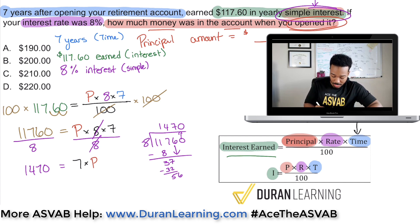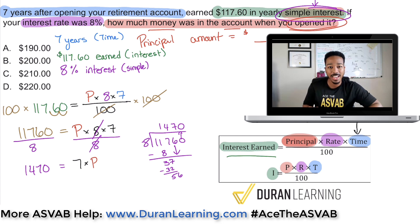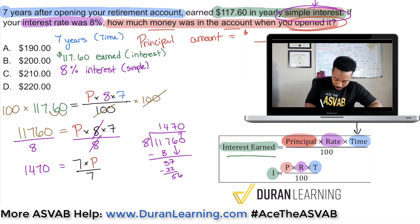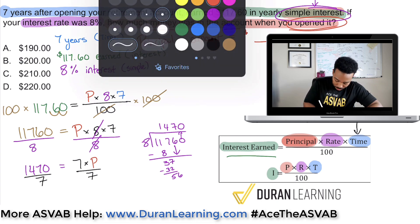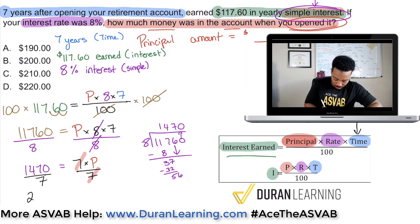One mental math approach: 8 goes into 11 once, remainder 3; 37 goes to 4; 56 goes to 7 — so 1,470. If you didn't quite follow that mental math technique, don't worry. Lastly, just divide by 7 and we're done. The sevens cancel out, and we're doing 1,470 divided by 7. Seven goes into 14 twice, seven goes into 70 ten times — so the answer is 210. And that's going to be the answer for P, your principal amount.